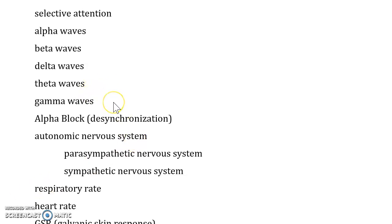The gamma waves are waves that are ultra high in frequency and are associated with a very active mind and brain that's processing information. The alpha block, or desynchronization, is when beta waves start to interfere with the alpha rhythm.